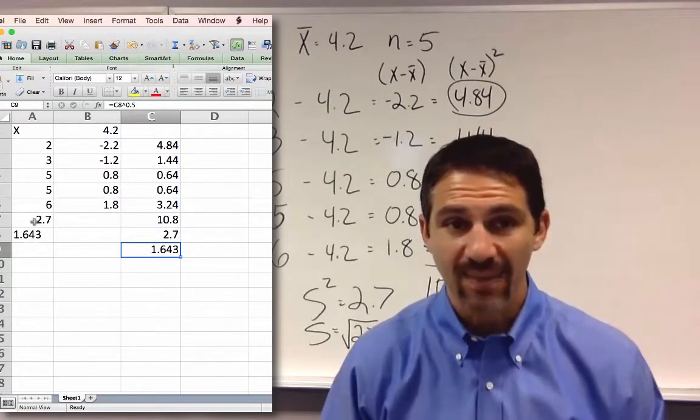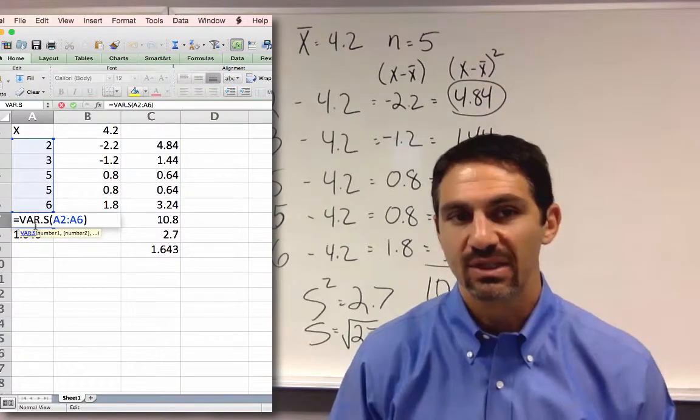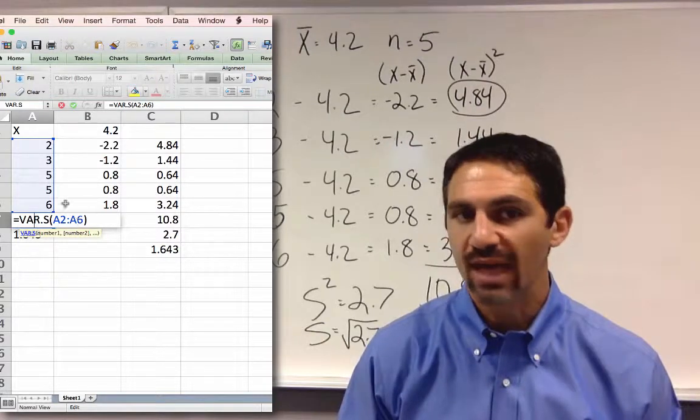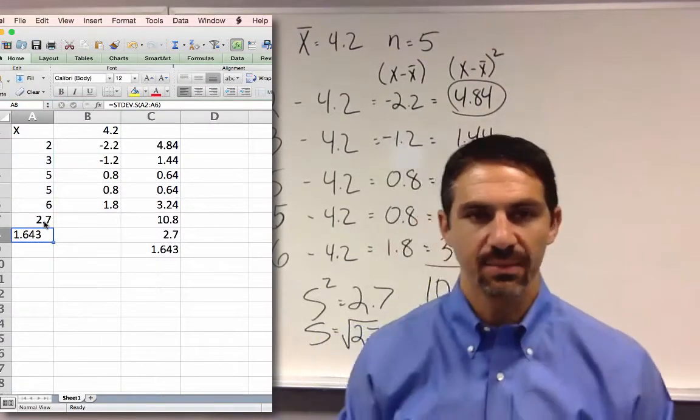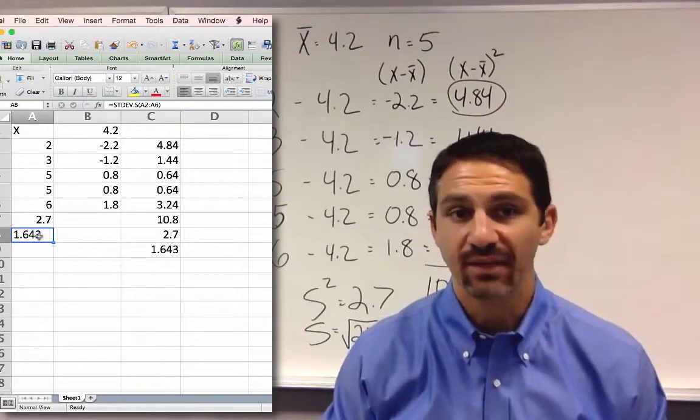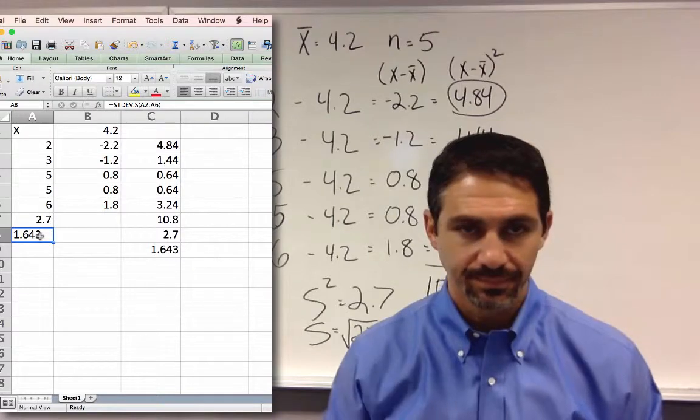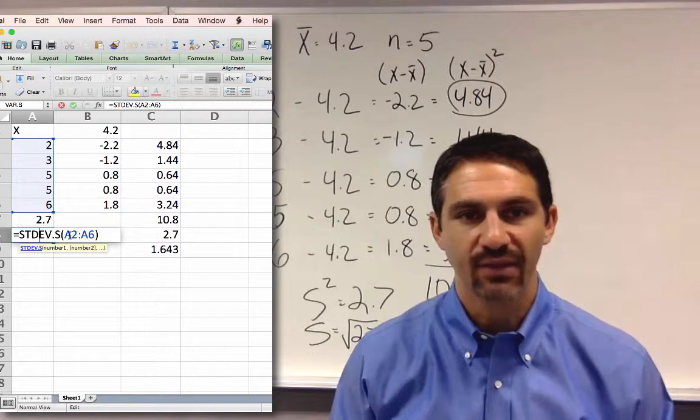Now, the easy way to do it is if I just did this formula right here, which is the variance for a sample from A2 to A6. You can see that it gives me the same value. And then standard deviation is just stdev.s, which you see here. And that's all that you have to do.